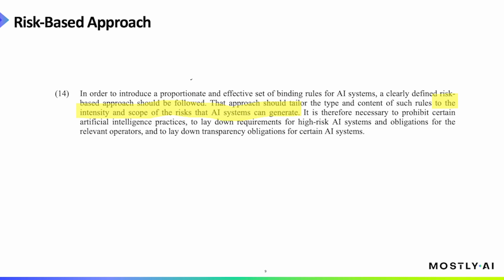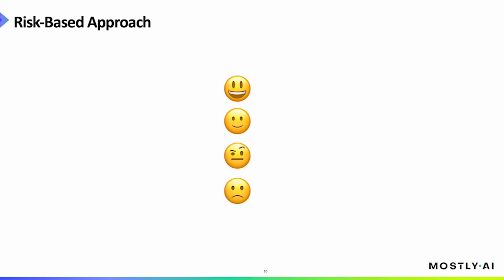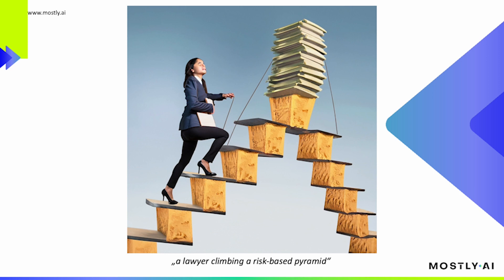So one of the first steps when dealing with the AI Act in practice will be to find out what risk category an AI system falls under. That sounds simple, but in practice, this will likely be quite a challenge for many developers and users of AI systems. But let's not despair and instead look at this exquisite picture of a lawyer climbing a risk-based pyramid.